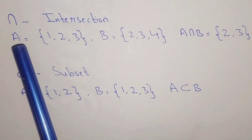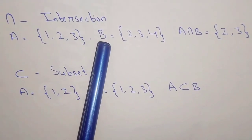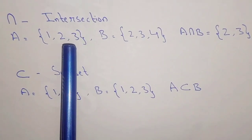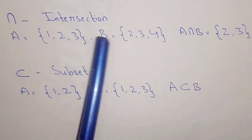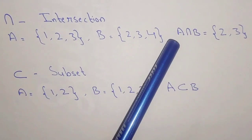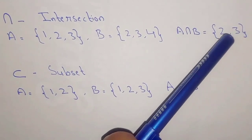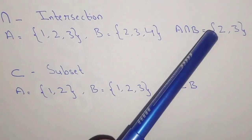For example, set A has elements 1, 2, and 3, and set B has elements 2, 3, and 4. The common elements in both sets are 2 and 3. So A intersection B equals {2, 3}.